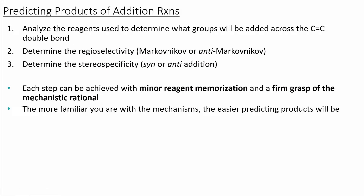For each addition reaction that we look at, there's a three-step process that we can use to help us determine what the products will be. The first step is to look at the types of reagents and use those to determine what types of groups will be added across the carbon-carbon bond. Once we obtain this information, we can determine the mechanism of the reaction and use that to help us determine the regiochemistry and stereochemistry.